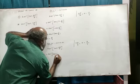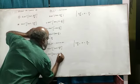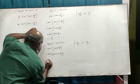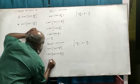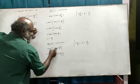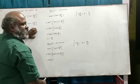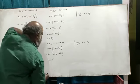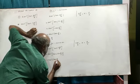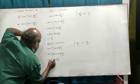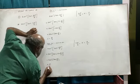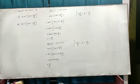Using the identity tan(π + θ) = tan θ, since 180 plus theta falls in the third quadrant and tan is positive there, tan inverse of tan(7π/6) simplifies to π/6.